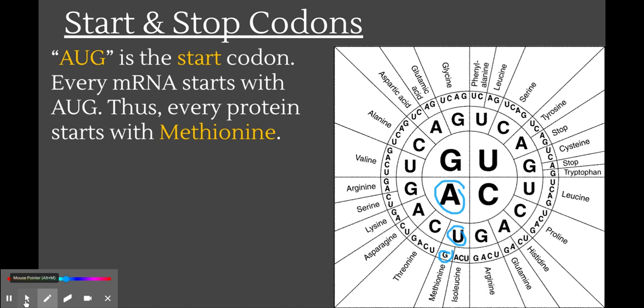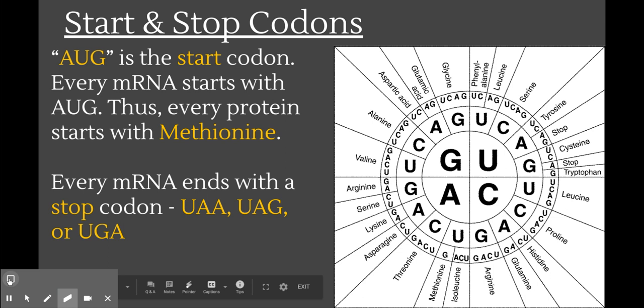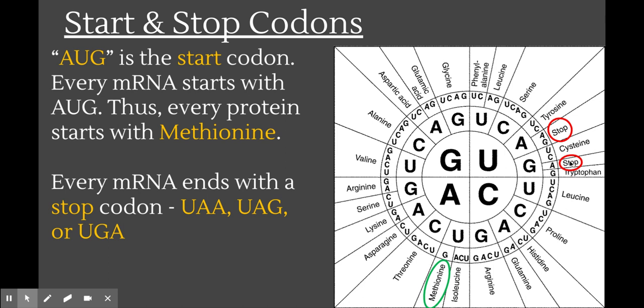There are also stop codons. Every single mRNA is going to end with one of three codons: UAA, UAG, or UGA. That will signal the ribosome where to stop. So ribosomes are very instruction-driven — they attach to an mRNA, look for the start codon, translate all the codons until they get to a stop codon, and then they stop.